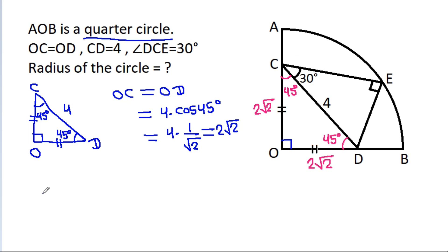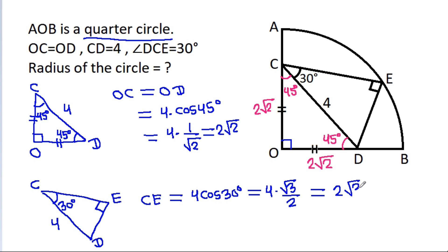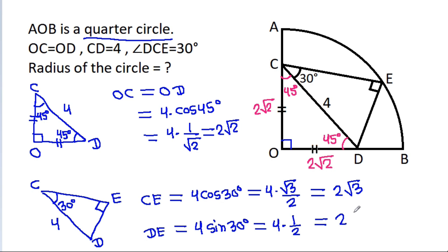Now in triangle CED: this angle is 90 degrees, this angle is 30 degrees, and CD is 4. So CE will be equal to 4 cos 30 degrees, which equals 4 times √3 over 2, that is 2√3. And DE will be equal to 4 sin 30 degrees, which is 4 times 1/2, equal to 2.